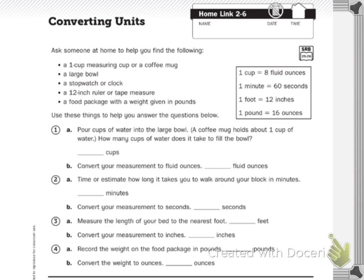You also have a great little resource to your right — I'm circling it in red. It gives you some conversions: one cup is also 8 fluid ounces, one minute is 60 seconds, one foot is 12 inches, and one pound is 16 ounces.